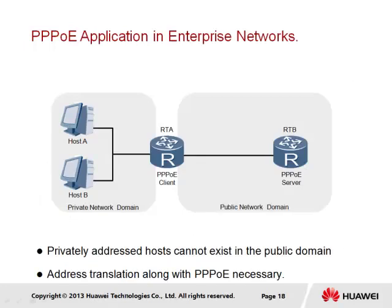The PPPoE session implementation demonstrated throughout this section is based on a typical lab environment. In real-world applications, hosts within the enterprise network are supported by private networks that cannot exist in the public domain, requiring addresses to be translated by the gateway, which is also the PPPoE client. The PPPoE client negotiates not only a session with the PPPoE server but also a public address for the outbound interface. Traffic from internal hosts such as Host A and Host B would have their addresses translated to the outbound interface addressing to support transmission over the established PPPoE session.